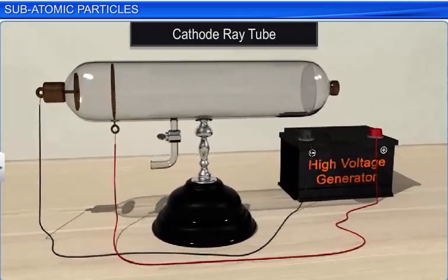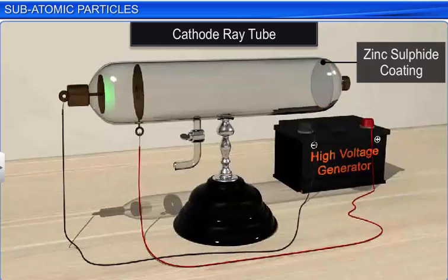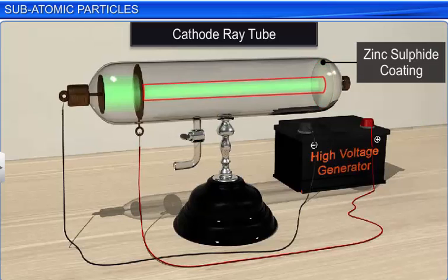To further study the behavior of this current, he punched the anode inside the cathode ray tube and coated the glass tube behind the anode with a fluorescent material such as zinc sulfide, then repeated the experiment. This time he noticed a bright spot on the coating behind the anode, which confirmed that the current consisted of invisible rays of particles, some of which could pass through the perforated anode, and that these rays were emitted from the cathode and moved towards the anode. These rays were named cathode rays.